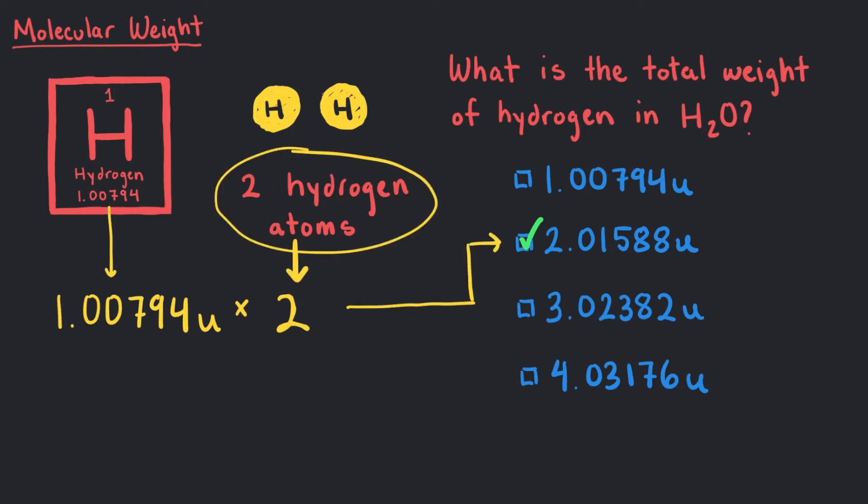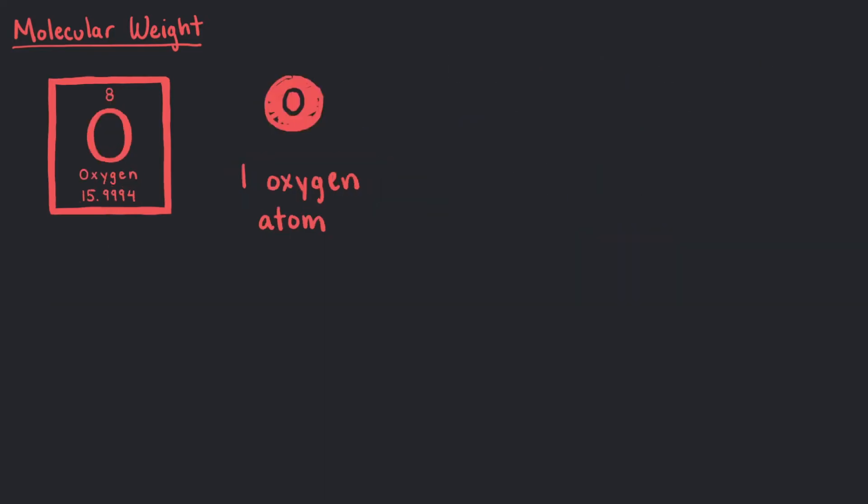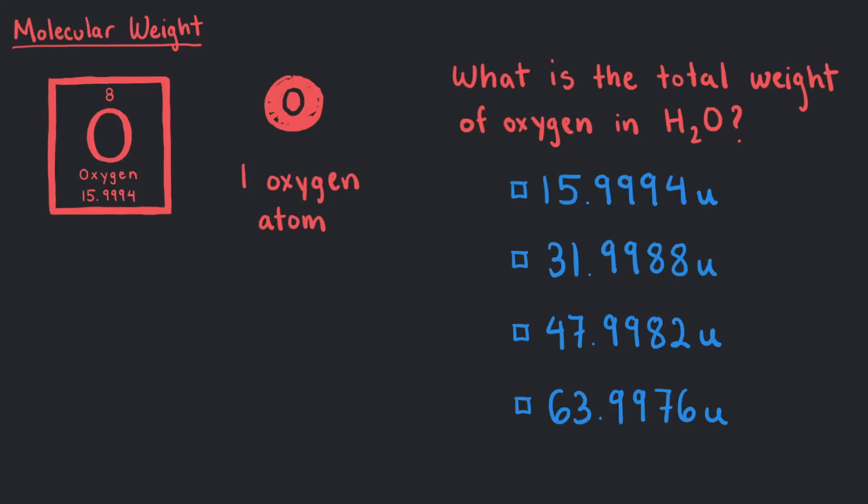But we're not done. We can't forget about the oxygen atoms that also make up H2O. What is the total weight of oxygen in H2O? Since there is only one oxygen, we have 15.9994U as the total weight for the oxygen in H2O.